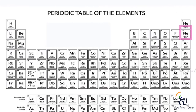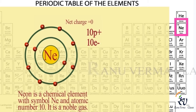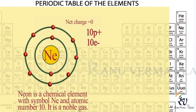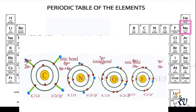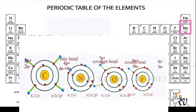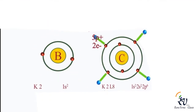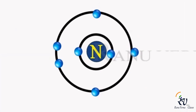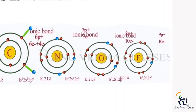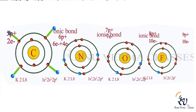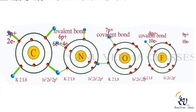In the second period, the last group element neon has 10 electrons. Its configuration will be 2 and 8 — meaning 2 electrons in the first orbit and 8 electrons in the second orbit. When we look at other elements of the second period, they have less than 8 electrons in their outermost shell. If the electrons are less than 4, they will donate electrons; and if more than 4, they will accept or share electrons to complete the octet.